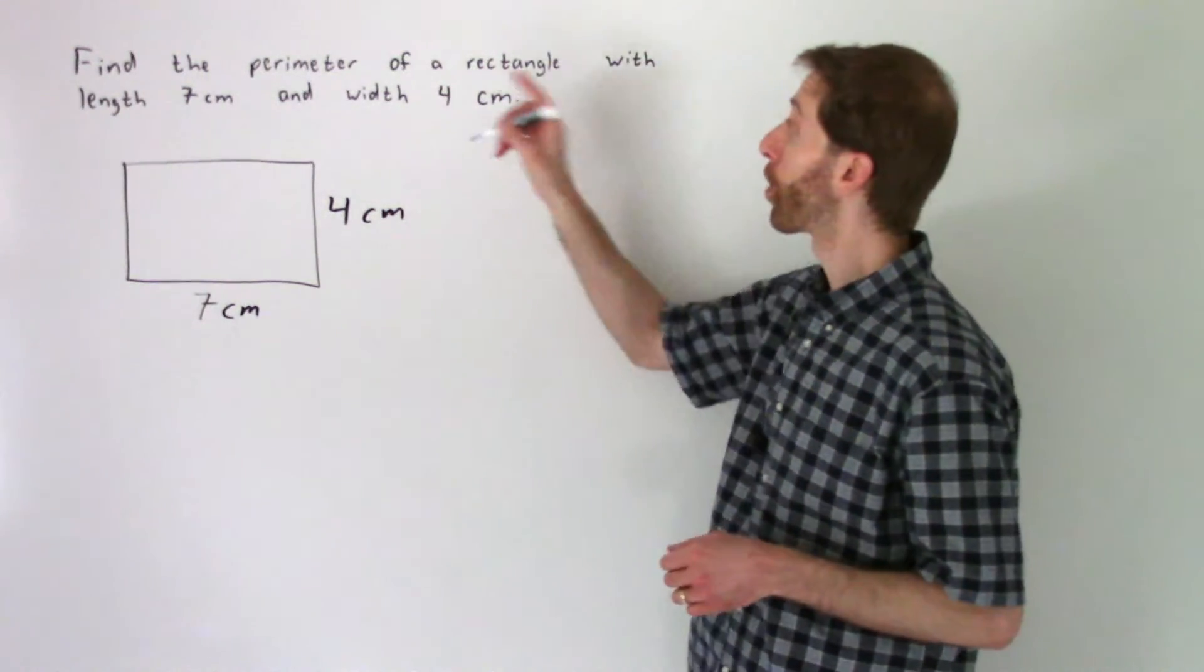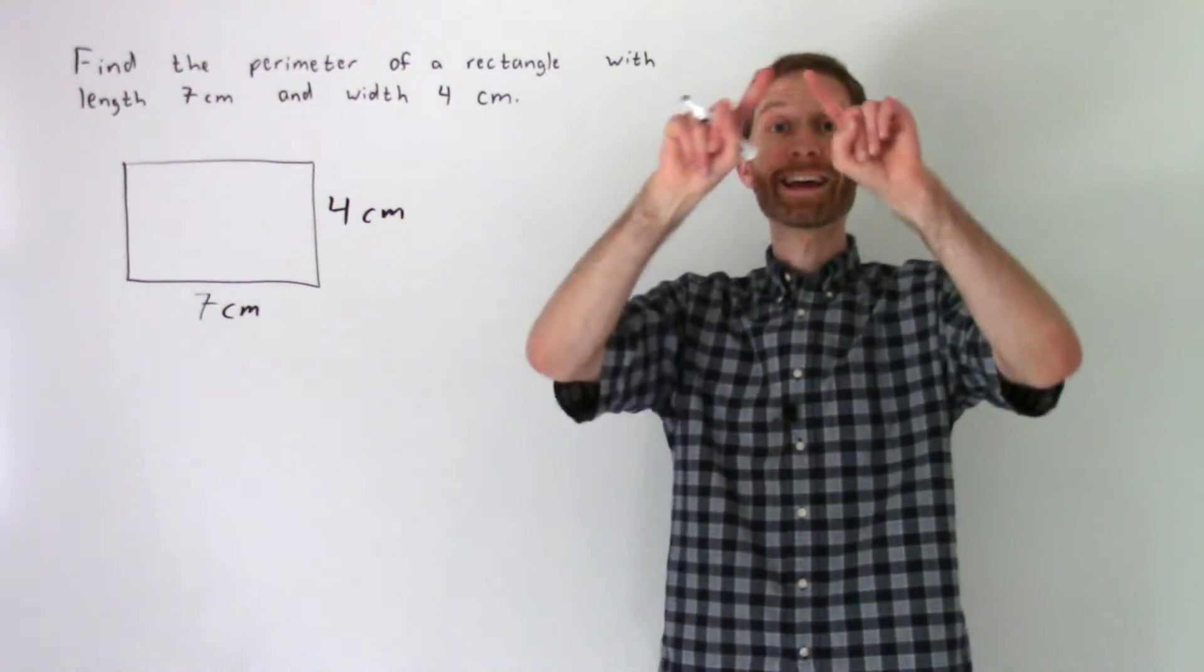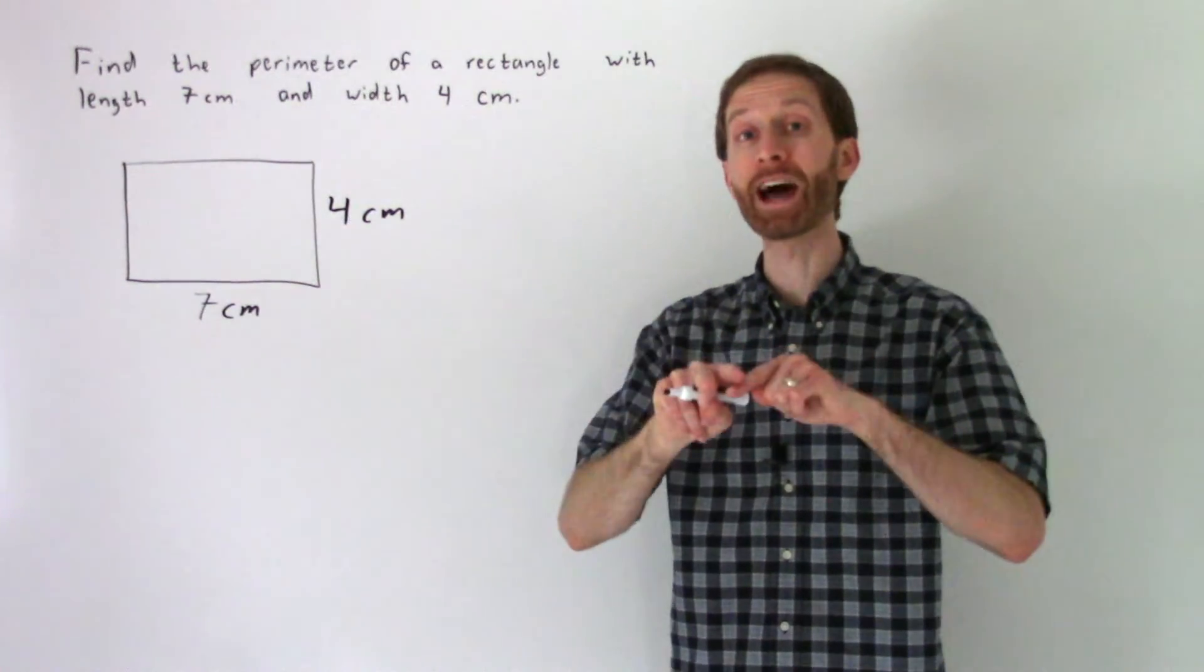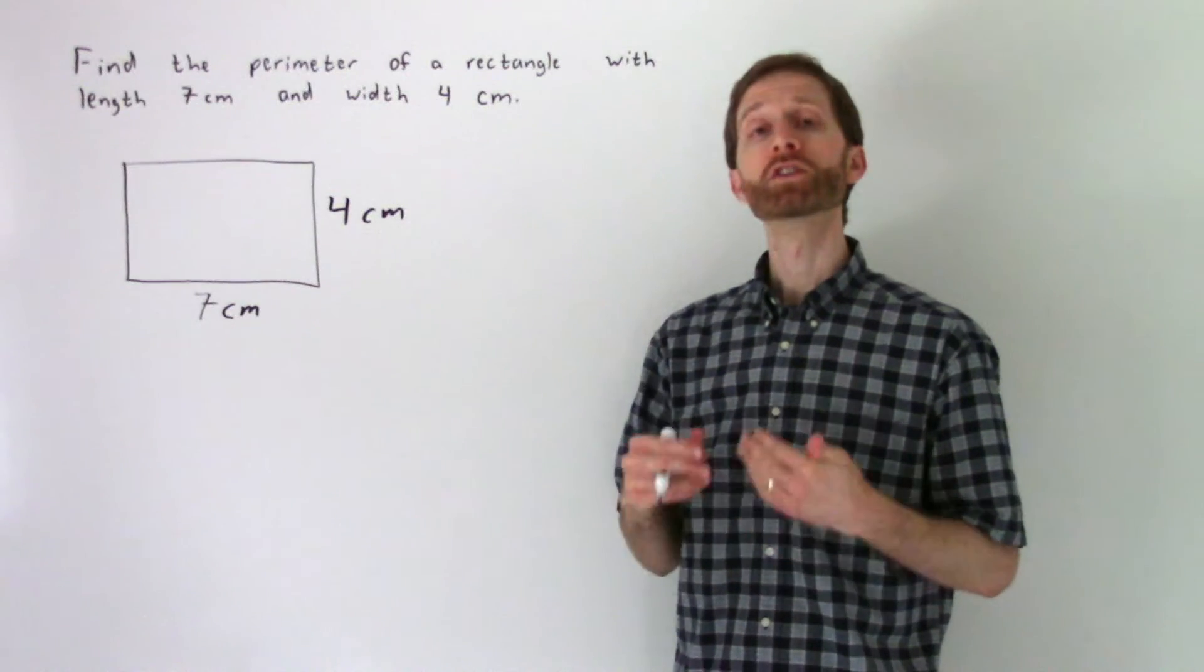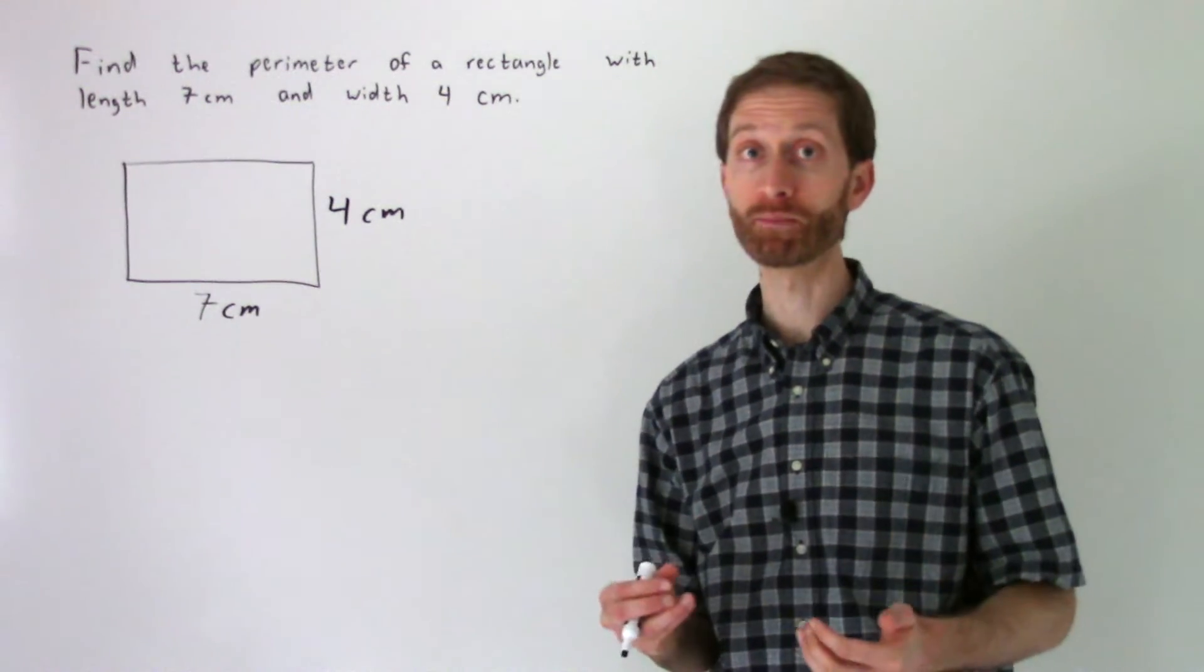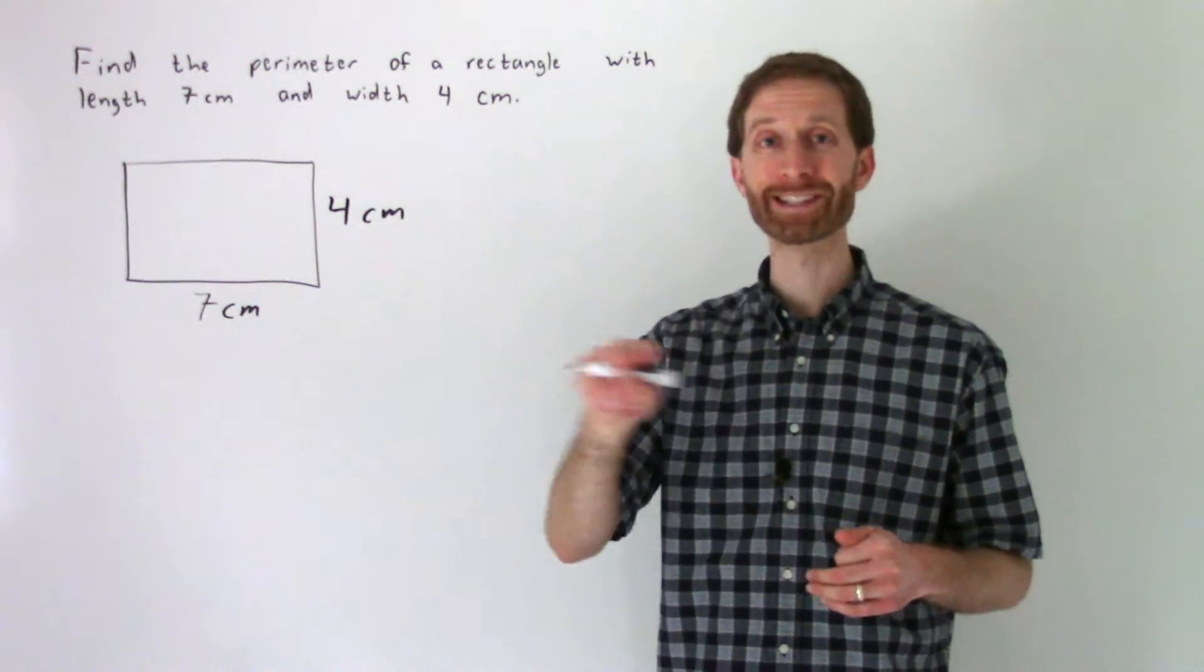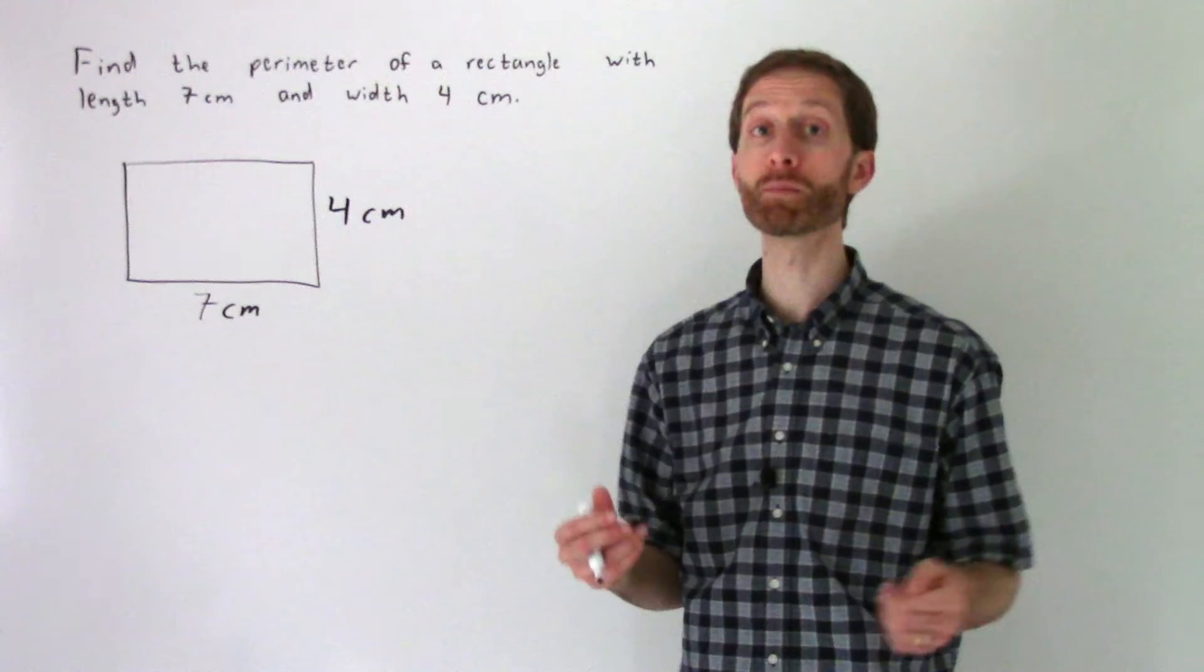Now if we're looking for the perimeter, what is the perimeter? Well, the perimeter of something is the distance around an object or around a figure. So we can do this in one of two ways. We can come up with a general formula for the perimeter of a rectangle, or we can add up all four side lengths of the rectangle. I'm going to do it both ways.